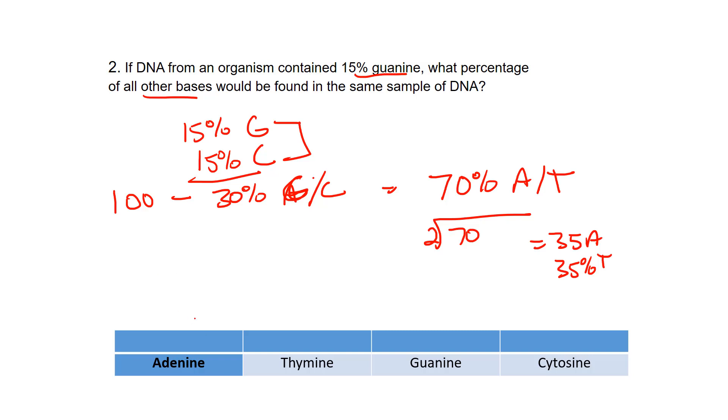We just have to fill that in. Just be careful when you're converting that over because sometimes you'll see that in a numerical response question. So 35, 35, 15% guanine and 15% cytosine.